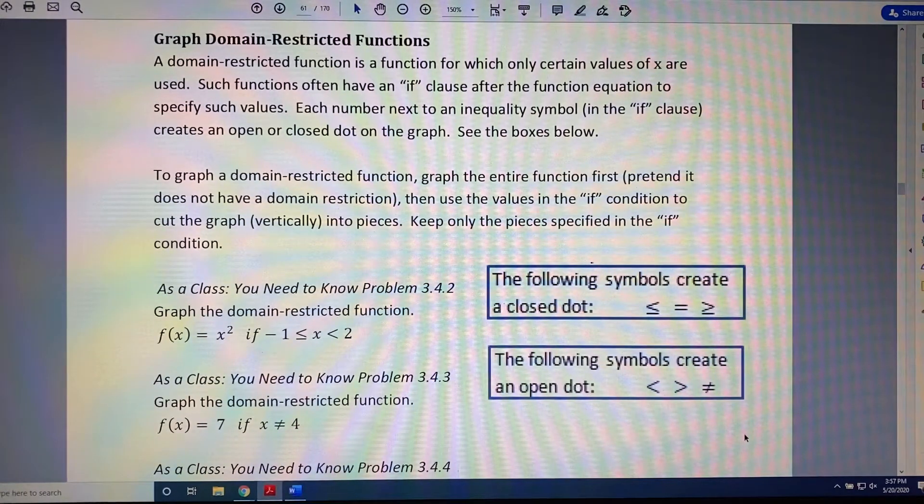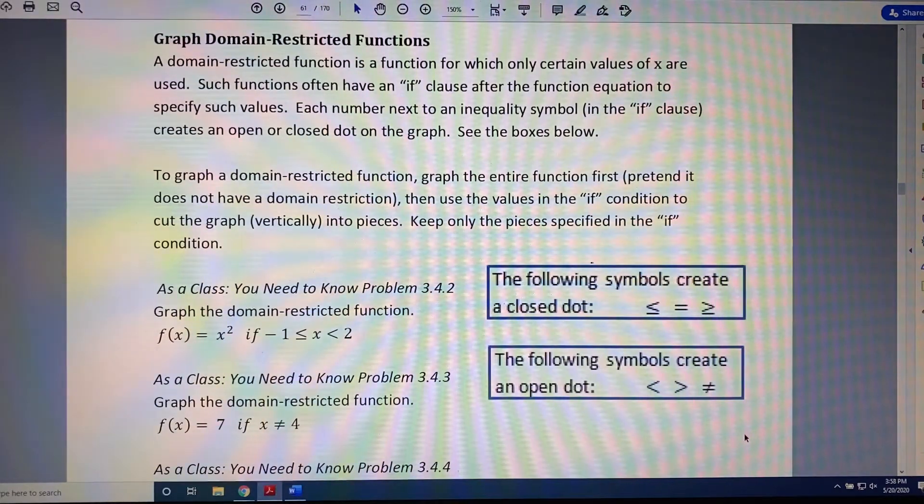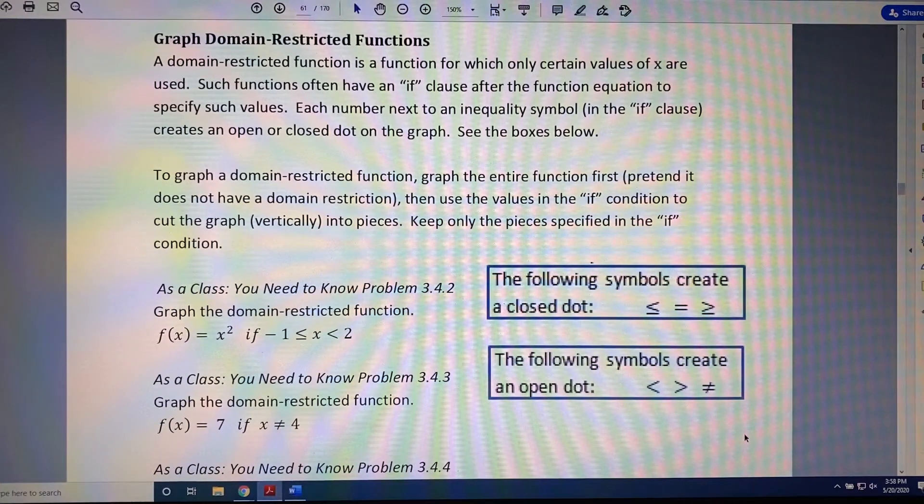Each number next to an inequality symbol in the IF clause creates an open or closed dot on the graph. See the boxes below.